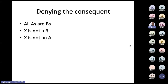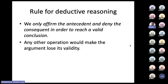The rule for deductive reasoning: we only affirm the antecedent and deny the consequence in order to reach a valid conclusion. Any other operation will make the argument lose its validity. If you deny the antecedent, the argument will lose validity. If you affirm the consequence, the argument will lose validity. You can only make a correct deductive argument by either affirming the antecedent or denying the consequent. The other two — denying the antecedent and affirming the consequent — are what we call formal fallacies. They are deductive fallacies that lead to fallacious conclusions.